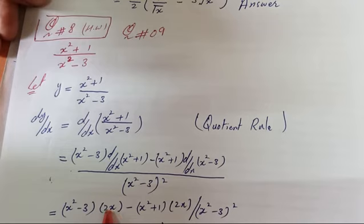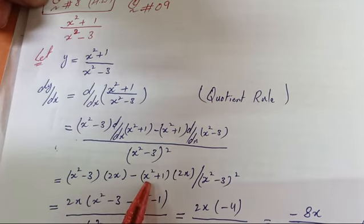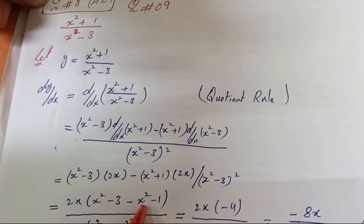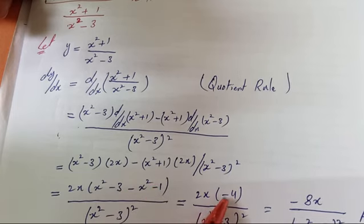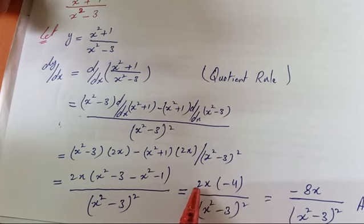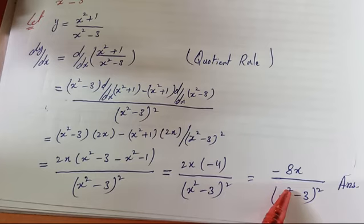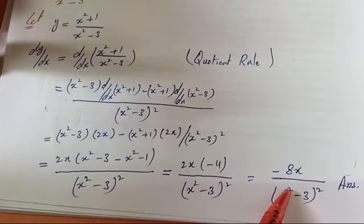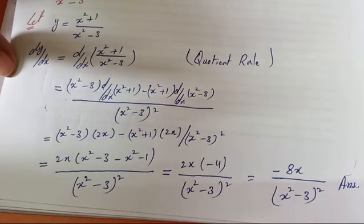Continuing the calculation: take 2x common from both terms in the numerator. This leaves (x² - 3) minus (x² + 1). Opening the bracket: x² - 3 - x² - 1; x² and -x² cancel, leaving -3 - 1 = -4. So we get 2x times (-4) = -8x, divided by (x² - 3)². This is the final derivative of the given expression. Now all 10 questions of exercise 2.3 are complete — do practice them. Fee Amanillah, Assalamualaikum warahmatullahi wabarakatuh.